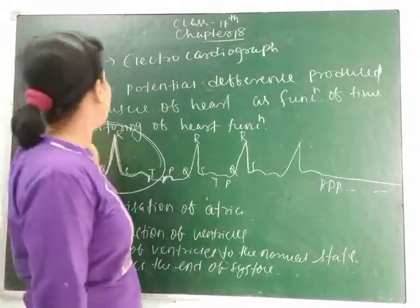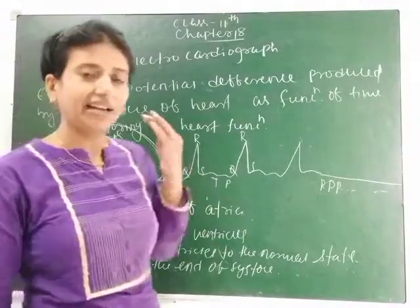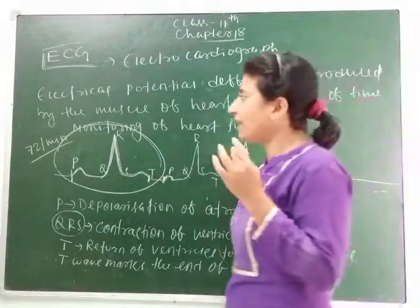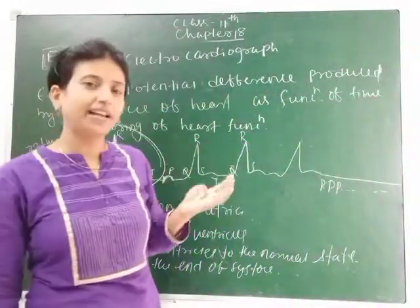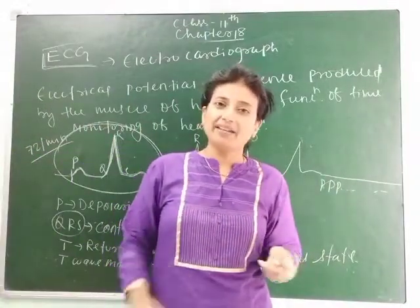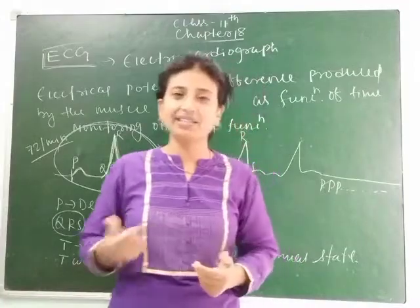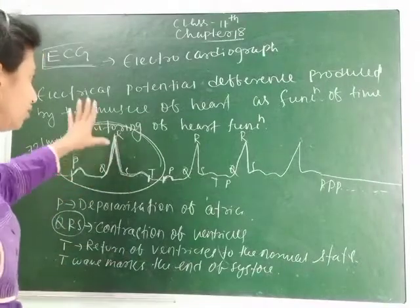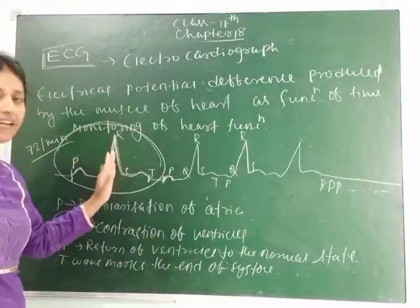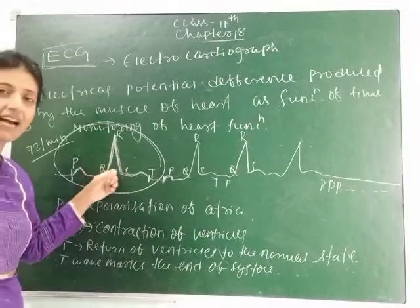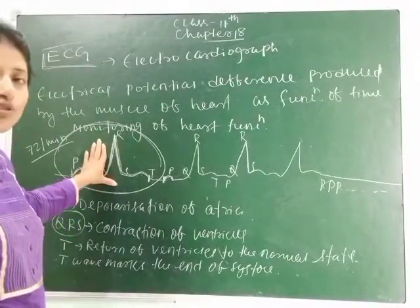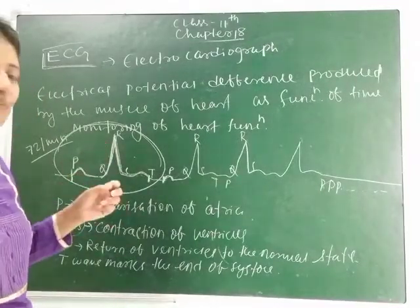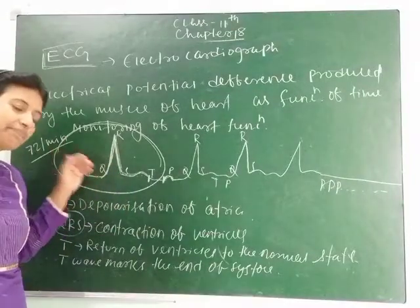This is all about ECG and it will help you in future. If someone in your family goes to the hospital, you can count the QRS complex yourself and monitor the heartbeat. If it is 72 or 70 times per minute, then it's okay.